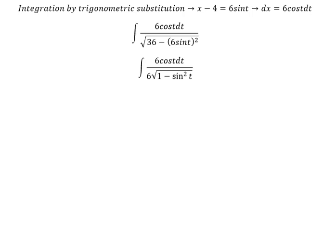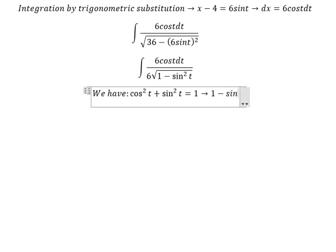And now we have cosine t squared plus sine t squared equal to 1, so we got 1 minus sine t squared equal to cosine t squared.